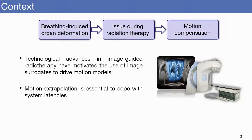Respiratory motion induced by free breathing is one of the major issues in abdominothoracic radiation treatment. Therefore, there is a need to compensate this motion during treatment. Over the last few years, magnetic resonance imaging has emerged as an image guidance modality in radiotherapy treatment units, where in-room images can serve as surrogates to drive motion models. In order to cope with system latencies, surrogate extrapolation is an essential step.